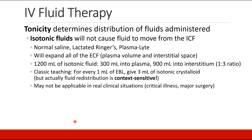Isotonic fluids are not going to pull fluid from the intracellular fluid, so they're not going to cause any fluid to move out of the cells. All of the fluids we commonly use — normal saline, lactated Ringers, and Plasmalyte — are relatively isotonic. When administered, these fluids will expand the extracellular fluid, which is your plasma volume and the interstitial space. If I give a 1200 milliliter bolus of isotonic fluid, about 300 mL will remain in the plasma and 900 mL will move into the interstitium — a ratio of 1 to 3.